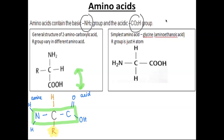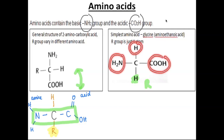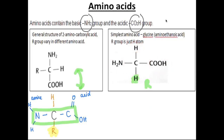The diagram on the right shows the simplest amino acid where your R group is a hydrogen. You can see there is an amine group, an acid group, a hydrogen, and then your R group happens to be hydrogen. This is called glycine. The special name for this amino acid is glycine.